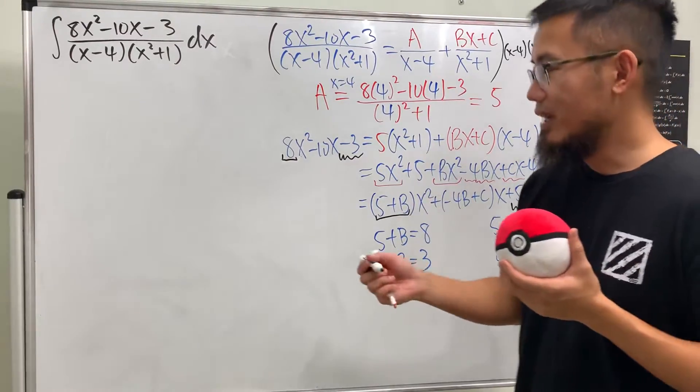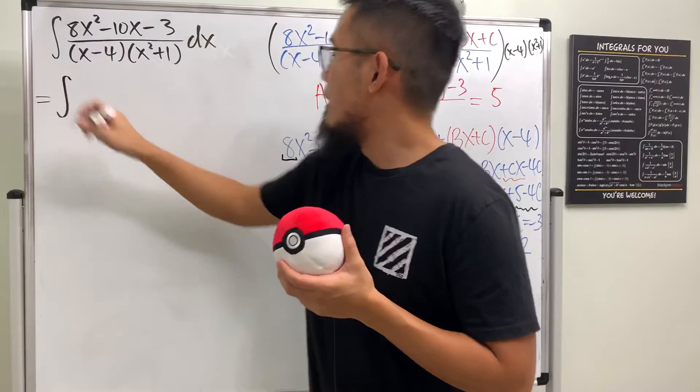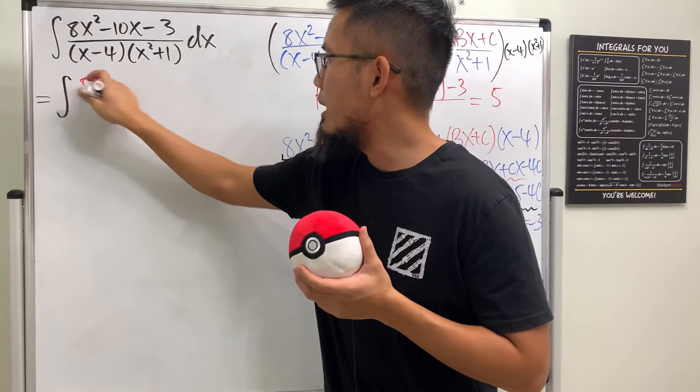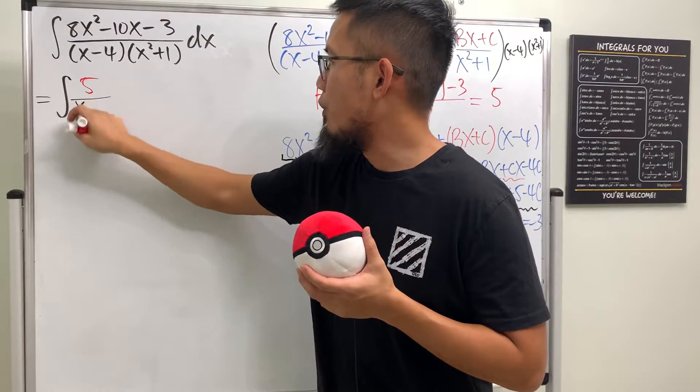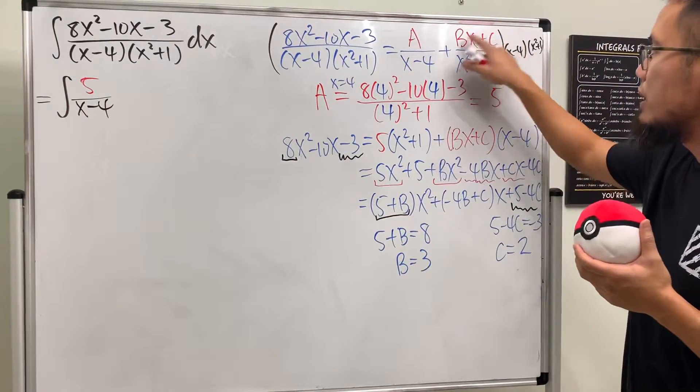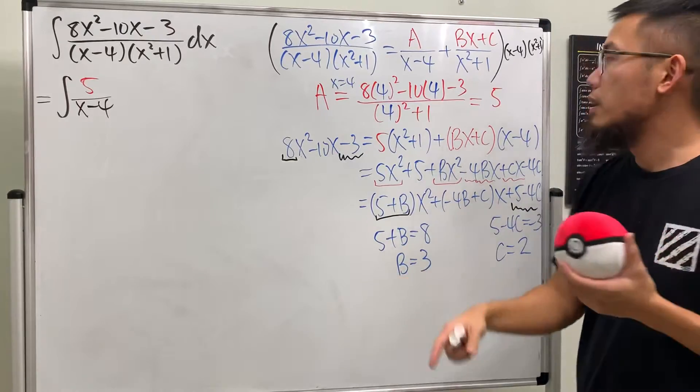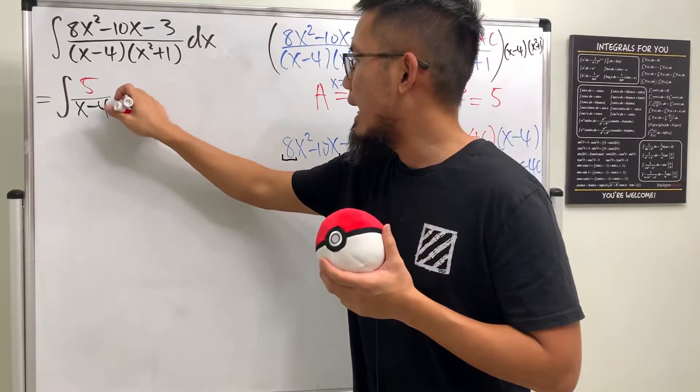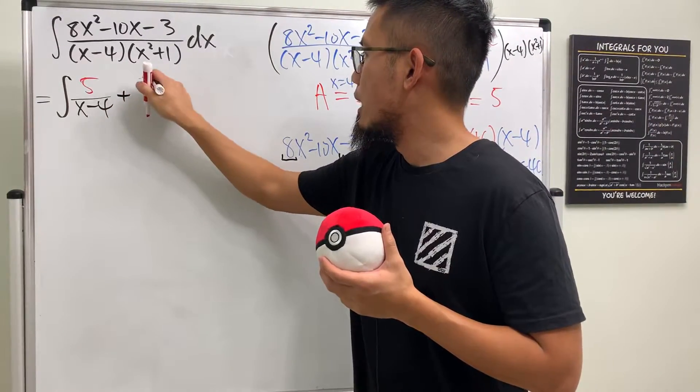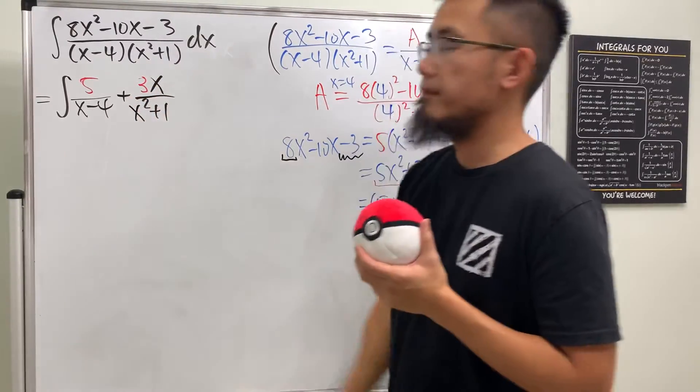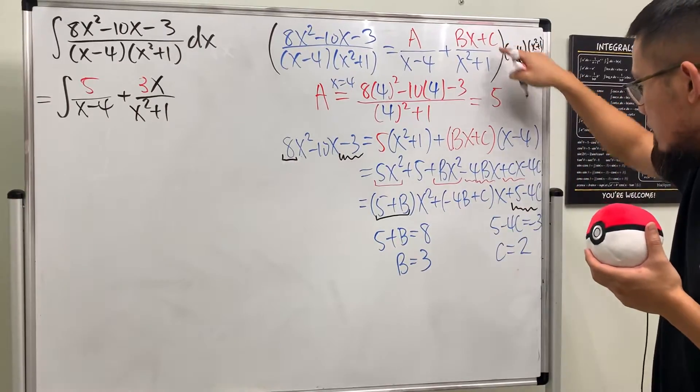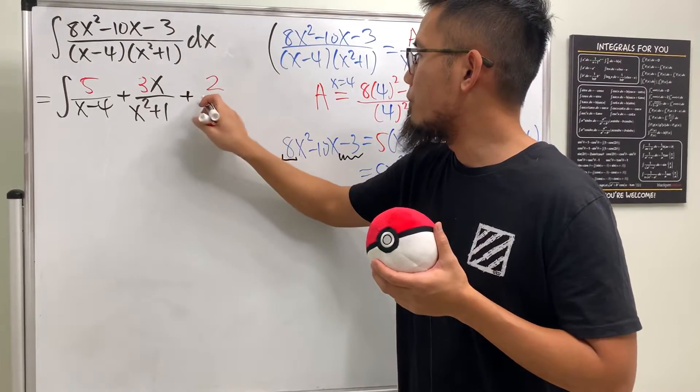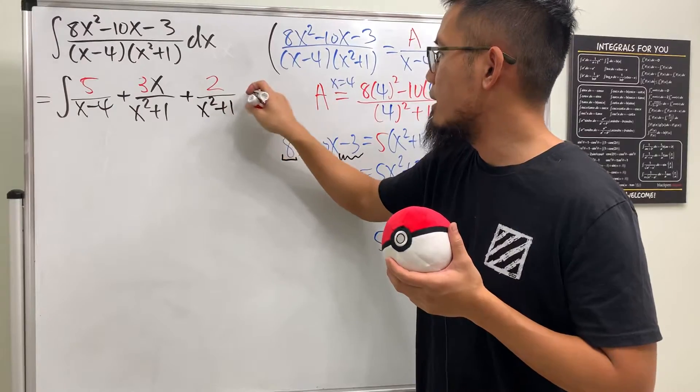So we are ready to go back and actually write down our integration. The first one is 5 over (x - 4), that's the fraction that we have to integrate. And then next, notice that we have two things on the top, we are just going to split the fraction. B is 3, so I'll put down 3x over (x² + 1). And then we have the C, C is 2, so I'll put down 2 over (x² + 1). And of course let's have that dx.